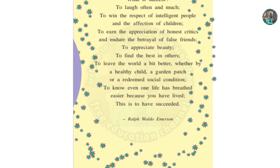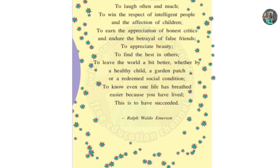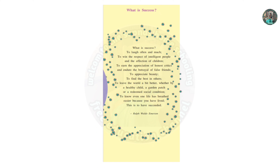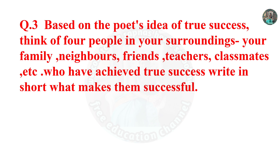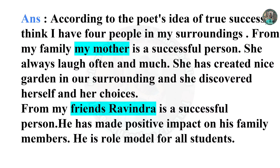Question 3 is based on the poet's idea of true success. Think of four people in your surroundings - family, neighbors, friends, teachers, classmates - who have achieved true success. Write in short what makes them successful. I have four people in my surroundings: my mother is a successful person, she always laughs often and much.